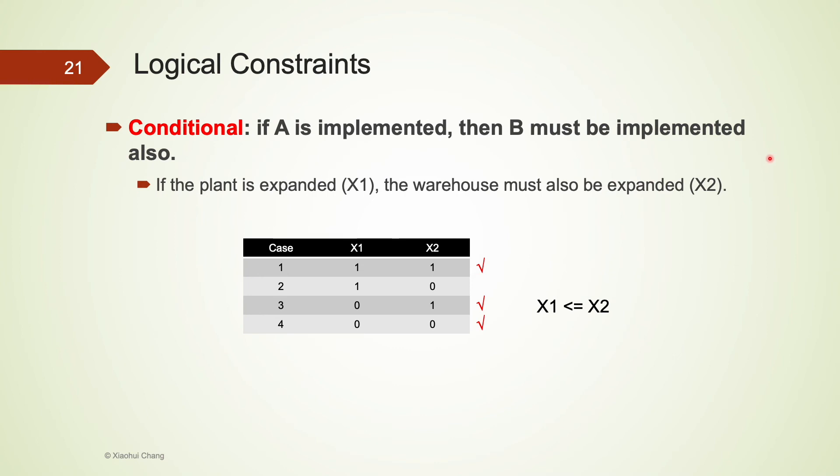A conditional constraint is whenever A is implemented, B is also implemented. In our example, this constraint could be if the plant is expanded, then the warehouse must also be expanded. Again, we present all four cases in a table format. Going through all cases, we can see that the only case that's not feasible is case number 2. As case number 2 says, if A is implemented, B is not implemented. This is exactly the opposite of what we wanted. All other three cases are feasible cases.